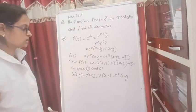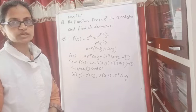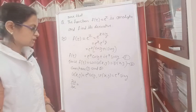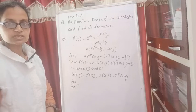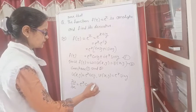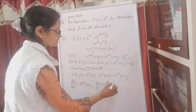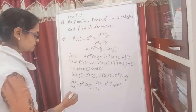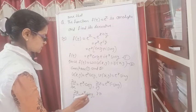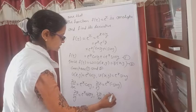The Cauchy-Riemann equations were covered in the last video. So we compute the partial derivatives of u and v with respect to x and y. del u upon del x: treating y as constant, the derivative of e to the power x is e to the power x, and cos y remains as is, giving e to the power x·cos y. del u upon del y: e to the power x remains, and cos y differentiates to negative sin y. del v upon del y gives e to the power x·cos y, and del v upon del x equals e to the power x·sin y.